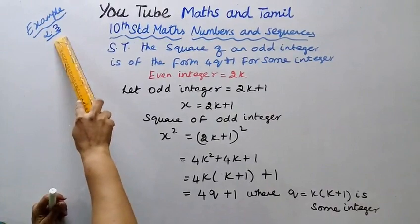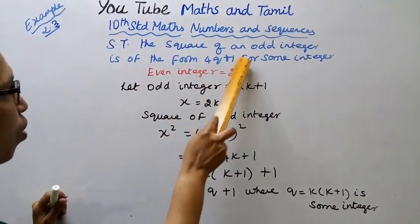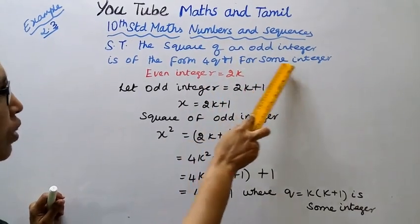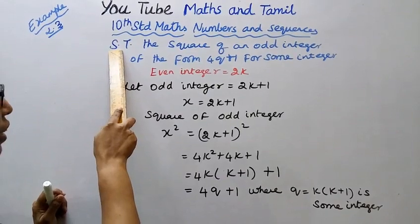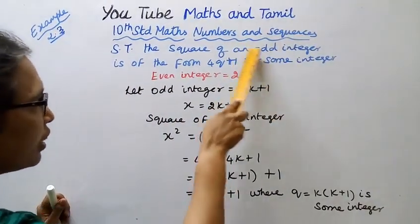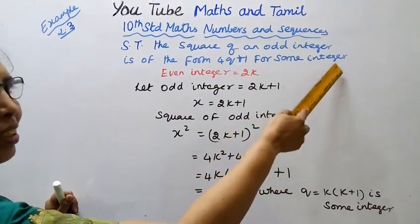Example 2.3: Show that the square of an odd integer is of the form 4Q plus 1 for some integer. Show that the square of an odd integer is in the form 4Q plus 1 for some integer.